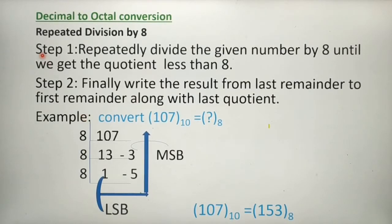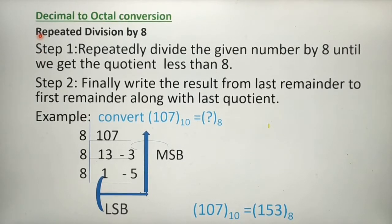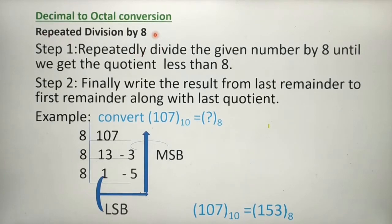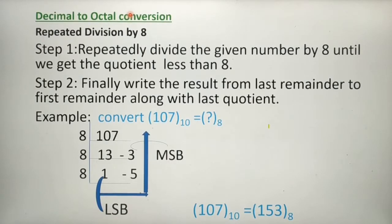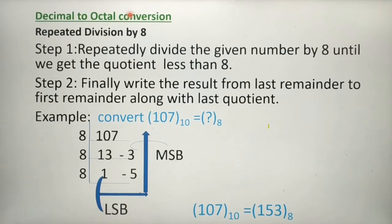First, let's see how to convert decimal to octal by using the repeated division by 8 method. Why do we divide the number by 8? Because octal means 8 numbers totally — 0 to 7 — so we have 8 numbers in total, and that is why we divide by 8.